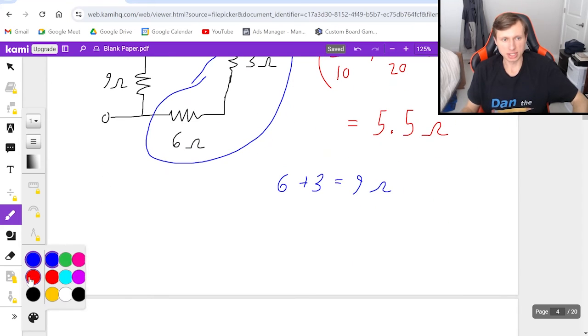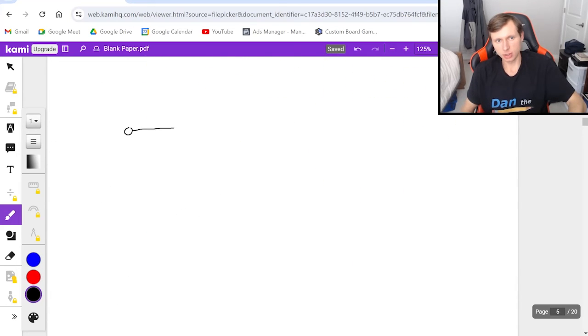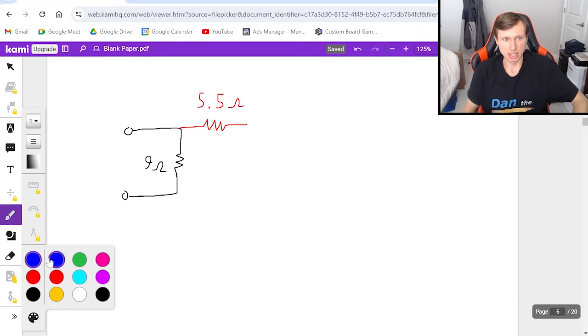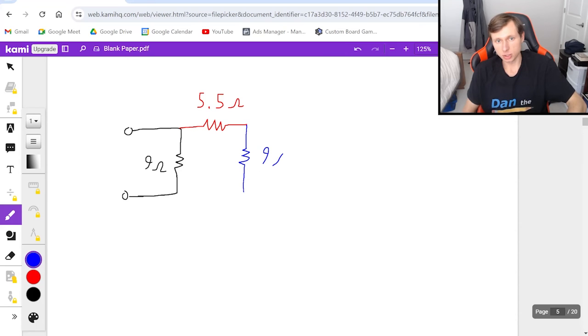Now maybe you're confused how you write this, so I'll show you. So I think we can all agree the 9 ohms right here didn't change because we didn't touch it. Then there's going to be one resistor right here. It's the 5.5 ohms from the red previously. And then the two blues combine to just make a single resistor right here, who is also 9 ohms.